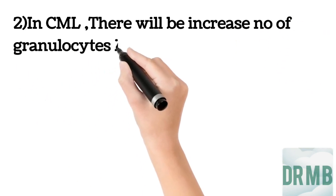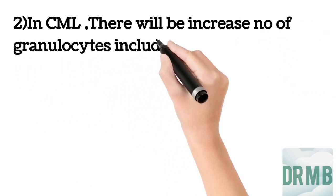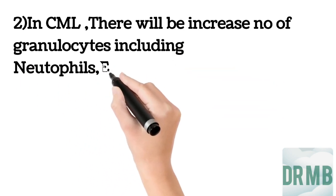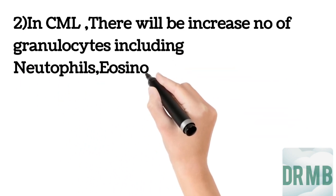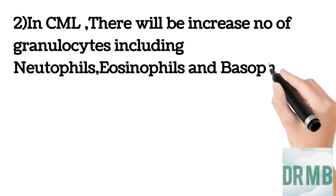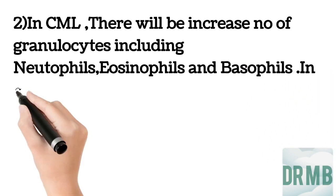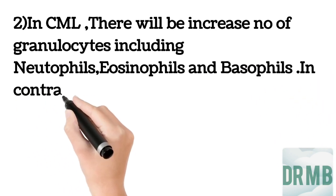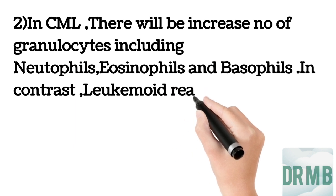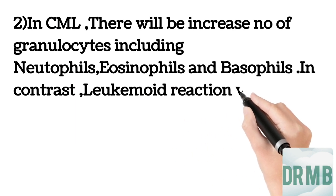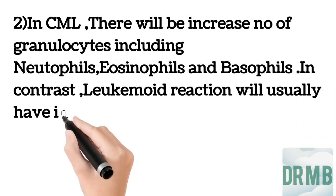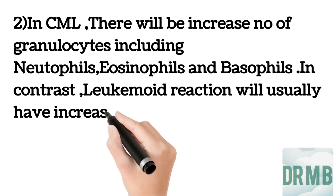In addition to this, in chronic myeloid leukemia there will be an increased number of granulocytes — neutrophils, eosinophils, and basophils — all are increased. In contrast, leukemoid reaction will usually have an increased number of only neutrophils.